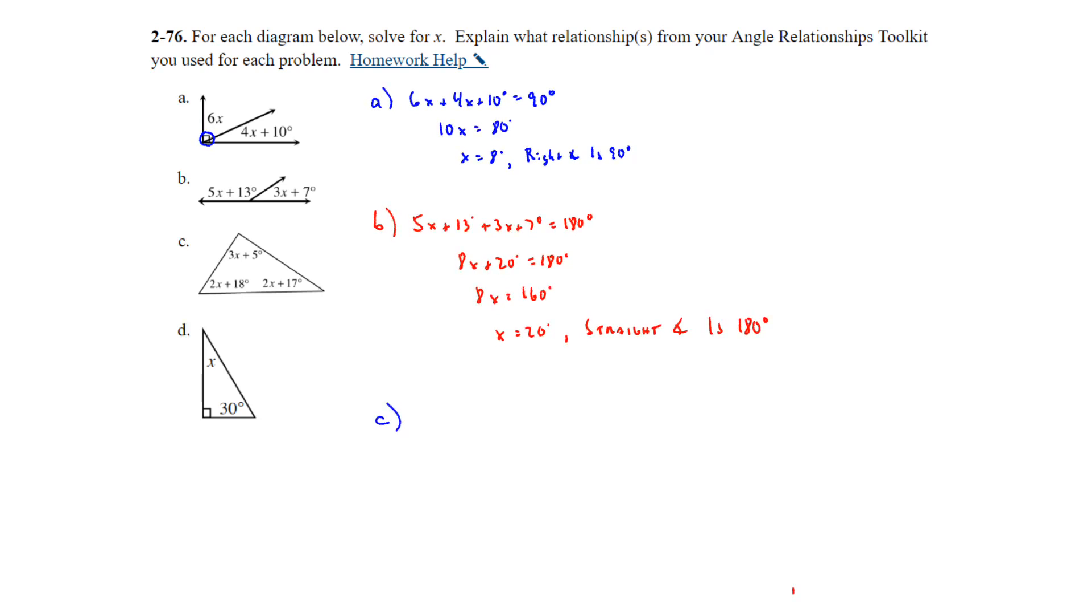Alright, on to part C. We have the triangle given with 3 angle measures in terms of x. We know the angle sum theorem, triangle angle sum theorem means that it adds up to 180. So we'll just go ahead and set that up with all 3 angles being added together. 2x plus 18 degrees plus 2x plus 17 degrees is equal to 180 degrees. Combine your like terms. That's 7x. And then you have 18 and 17, 35 plus 5 would be 40 degrees. Subtract 40 degrees to get 140 degrees. Divide by 7, and x is equal to 20 degrees. And once again, we knew that because of the triangle angle sum theorem.